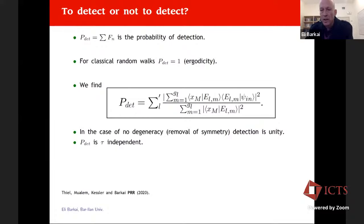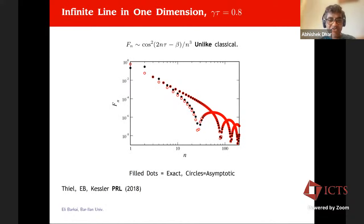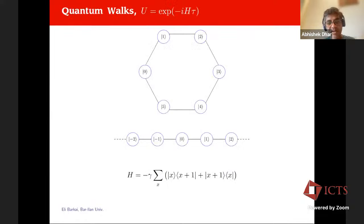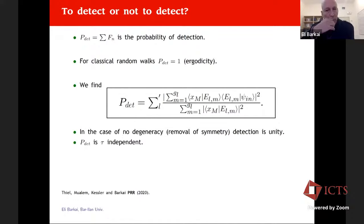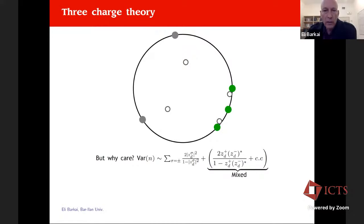Q (Abhishek): How exactly do you manage to get the Dirac spectrum for the crawl model? A: The idea is to create a Hamiltonian such that...